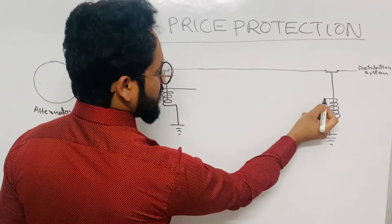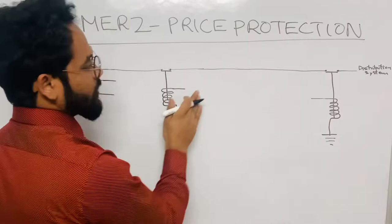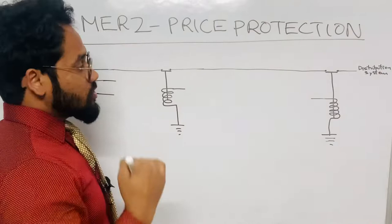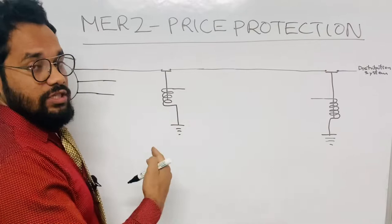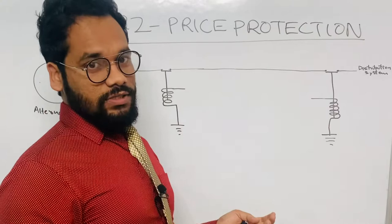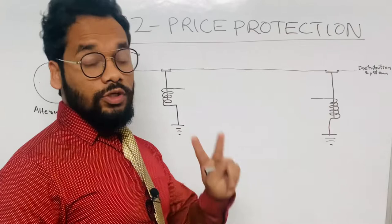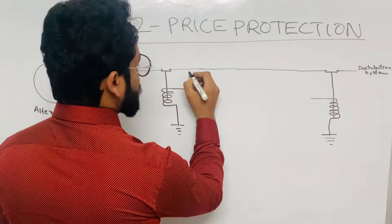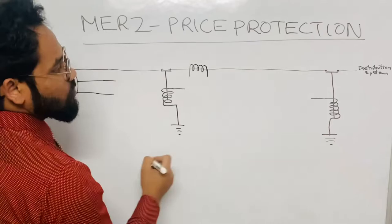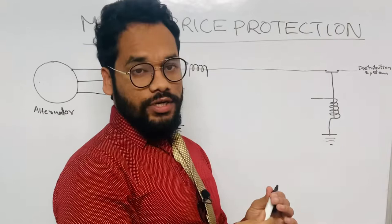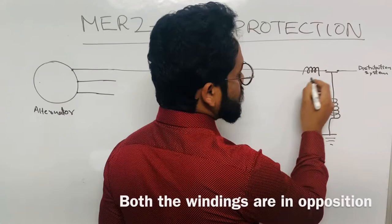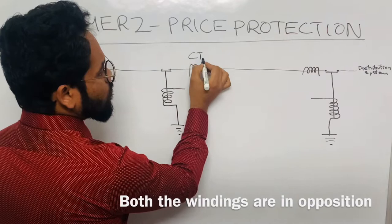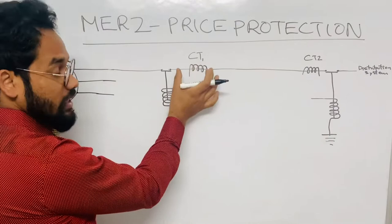Both relay coils are connected to the aircraft structure. Now, where are the other ends of the relay coils connected? In the Merz-Price protection system, current transformers play a very important role — without them, the system has no significance. This system always employs two current transformers. One current transformer is placed near the source, and another current transformer is placed near the distribution system. Suppose this is CT1 and this is CT2.